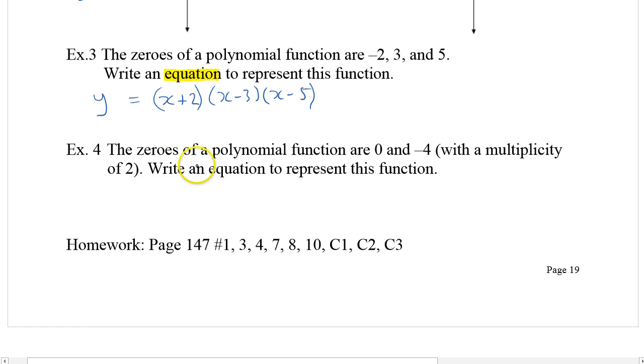Example number 4: the zeros of a polynomial are 0 and -4 with a multiplicity of 2. Write an equation to represent this function. I'll go with f(x) this time. A zero of 0 would simply be x, and a zero of negative 4 would be (x+4) with a multiplicity of 2, meaning I put a square there. Okay, so there's your homework and I will see you in class.